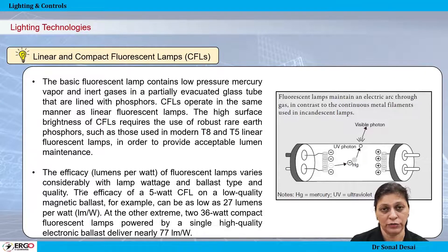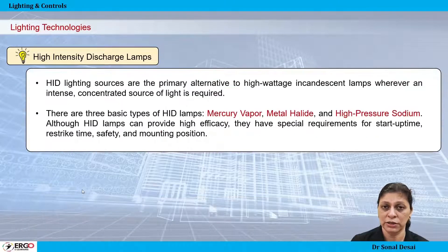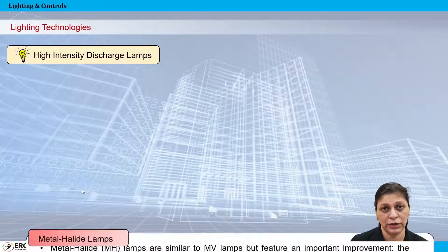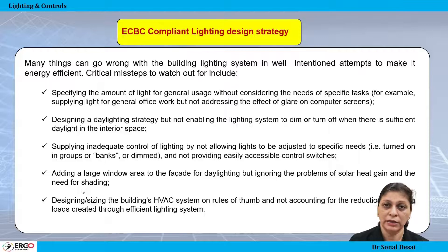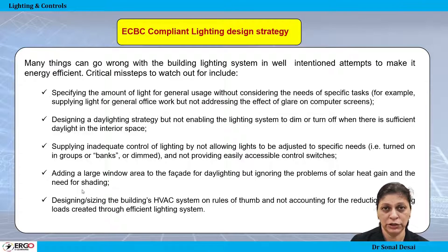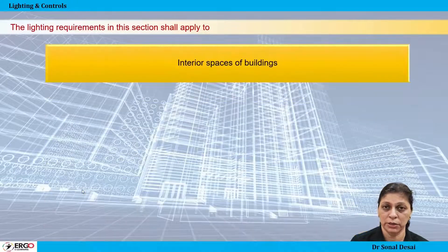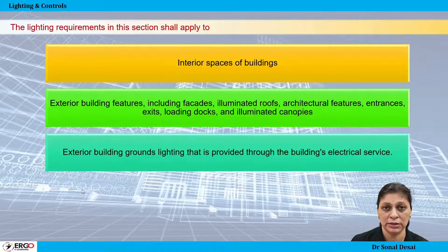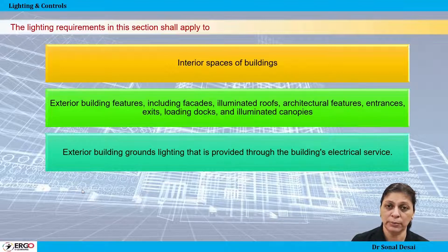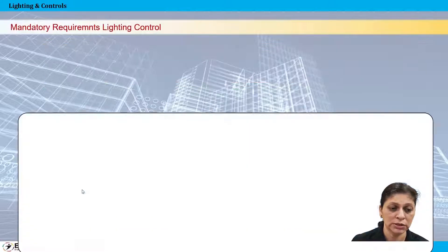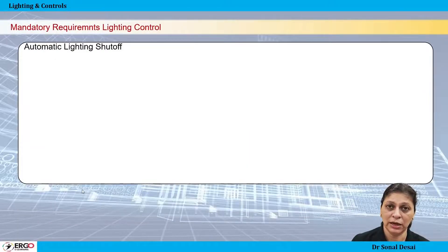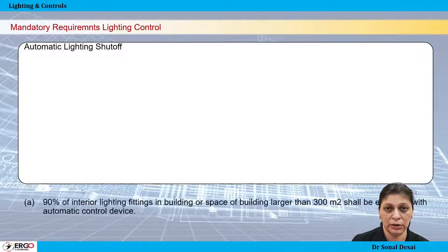Detailing of different lighting technologies covers their construction and working features, helping with selection for particular applications. The final part covers energy-efficient building compliance — what mandatory and prescriptive requirements exist, what is included as part of those compliance requirements, and what is excluded.